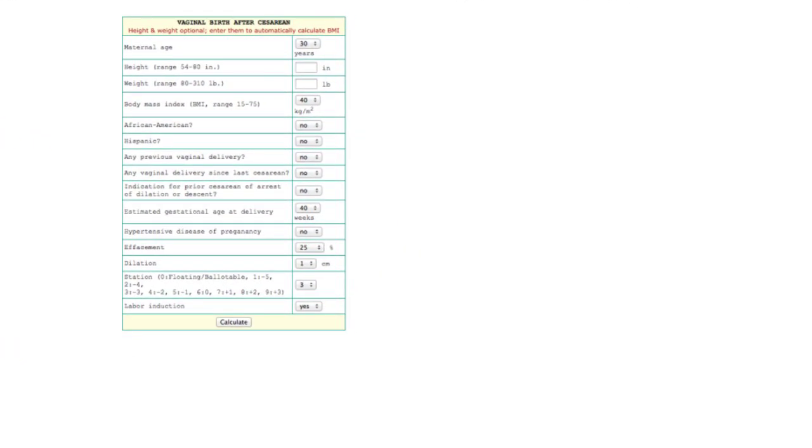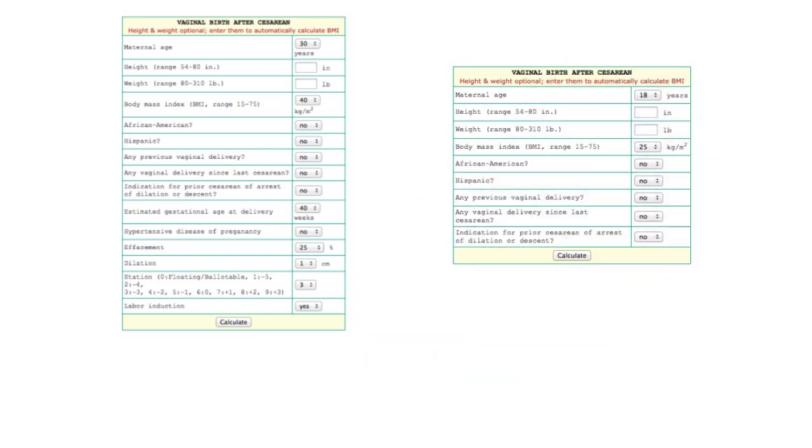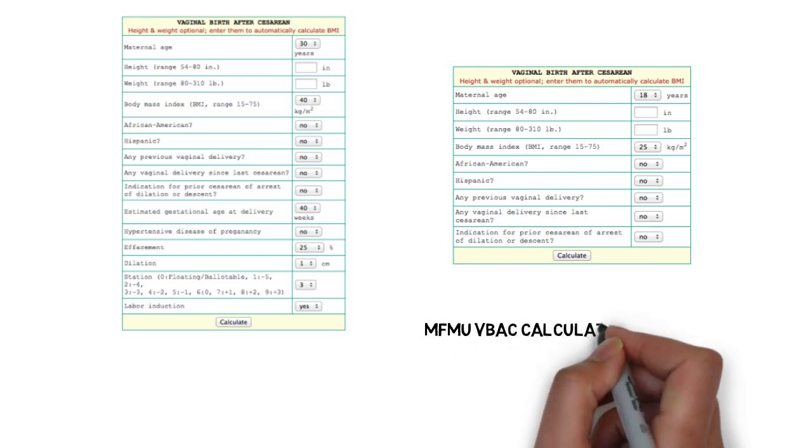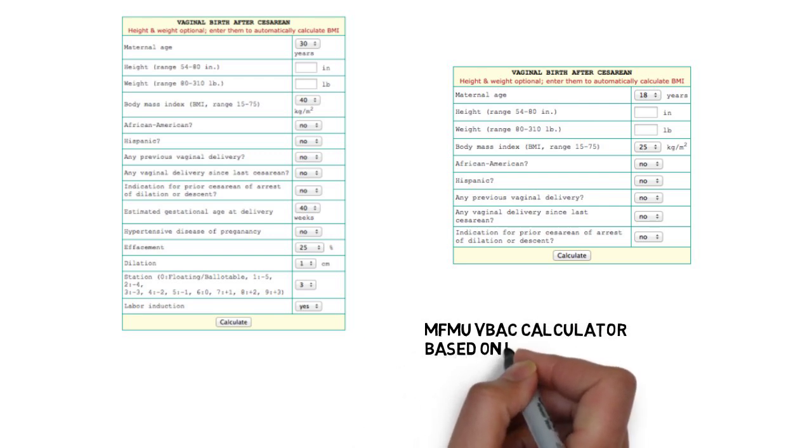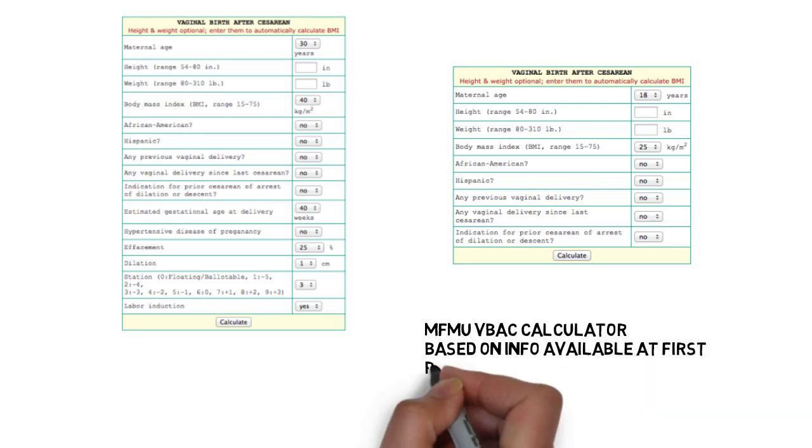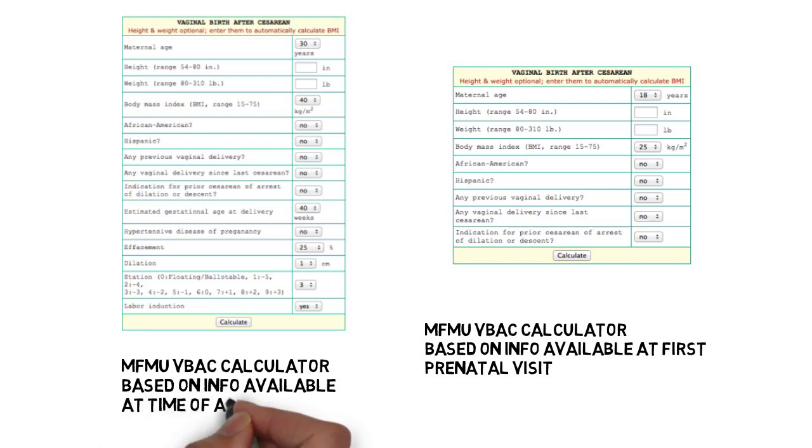and some obstetric characteristics like the reason for the first C-section, spontaneous versus induced labor, gestational age, etc. The most widely used is that developed by the MFMU network for singletons with one previous C-section using information available at the first prenatal visit. Although no models have shown improved patient outcomes, the model may be used to facilitate patient counseling.